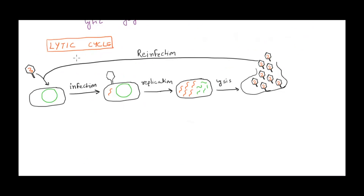The first type of bacteriophage life cycle is the lytic cycle. The bacteriophage infects a bacteria, attaches to it, and releases its DNA into the host. This viral genome takes control of the bacterial machinery, degrades the host chromosome, and the infected bacteria produces many copies of viral particles. In the end, they lyse the host cell and go on to reinfect other bacteria.